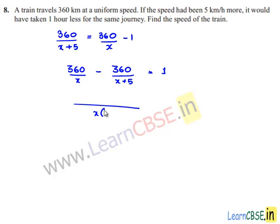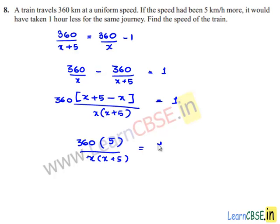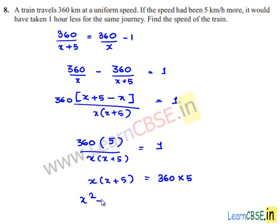The LCM will be x times (x plus 5). Taking 360 as common, we get: 360 times (x plus 5 minus x) divided by x(x plus 5) equals 1. So 360 times 5 divided by x(x plus 5) equals 1. Therefore x(x plus 5) equals 1800, giving us x² plus 5x equals 1800.